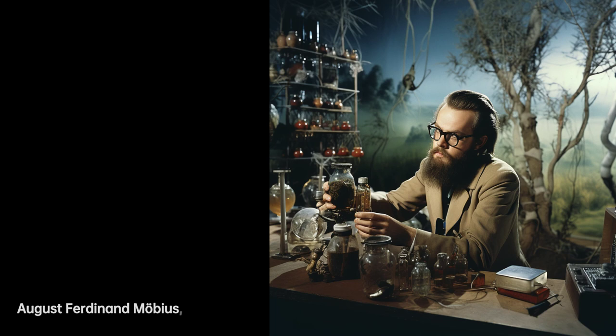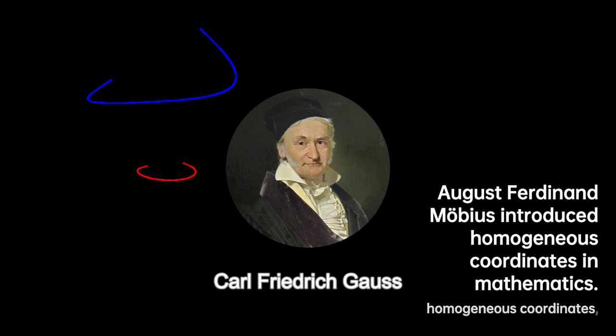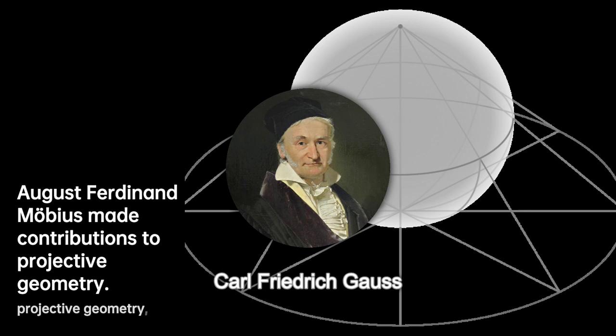There he studied astronomy under the guidance of the renowned mathematician and astronomer Carl Malweide. Möbius's thirst for knowledge led him to the University of Göttingen, where he studied under the tutelage of the legendary Carl Friedrich Gauss. Gauss, who was the director of the Göttingen observatory, recognized Möbius's talent and nurtured his passion for astronomy.